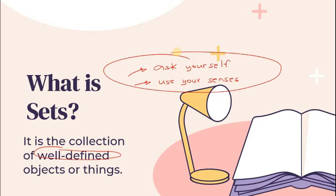Next, use your senses. Alimbawa, hindi lahat ng naaamoy natin na babango ay mabango para sa ibang tao. Yung pagkain na for us masarap, maaaring sa ibang tao ay hindi siya masarap. Then that collection of food ay maaaring null set. Now, how about colors? Obviously, kapag nagpakita ako dito sa inyo at sinabi kong this font color is black, obviously, alam natin na yan talaga ay black.